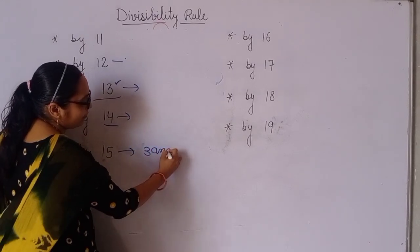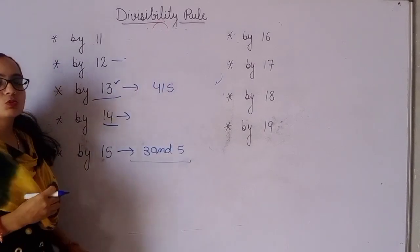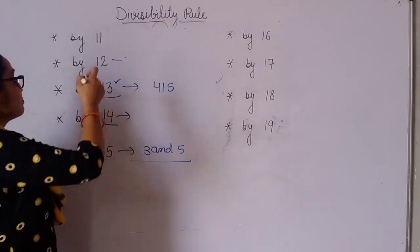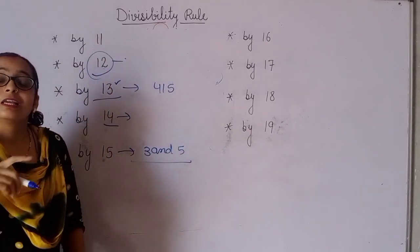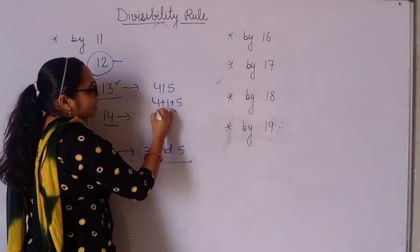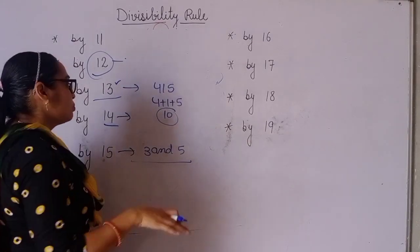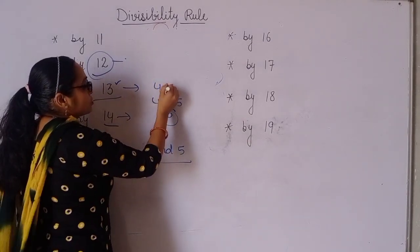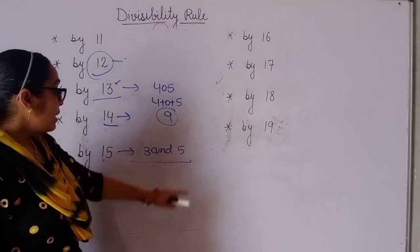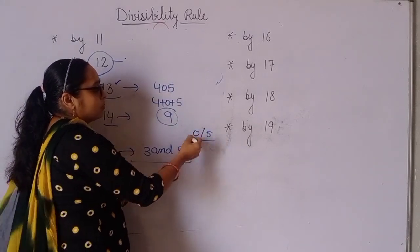Suppose I have 4150. For 3: add the digits — 4 + 1 + 5 + 0 = 10, and 10 is not divisible by 3, so not divisible. But suppose the number is 4050: add digits — 4 + 0 + 5 + 0 = 9, which is divisible by 3. For 5: the unit digit should be 0 or 5. Here unit digit is 0, so it's divisible by 5. Therefore this number is divisible by 15.